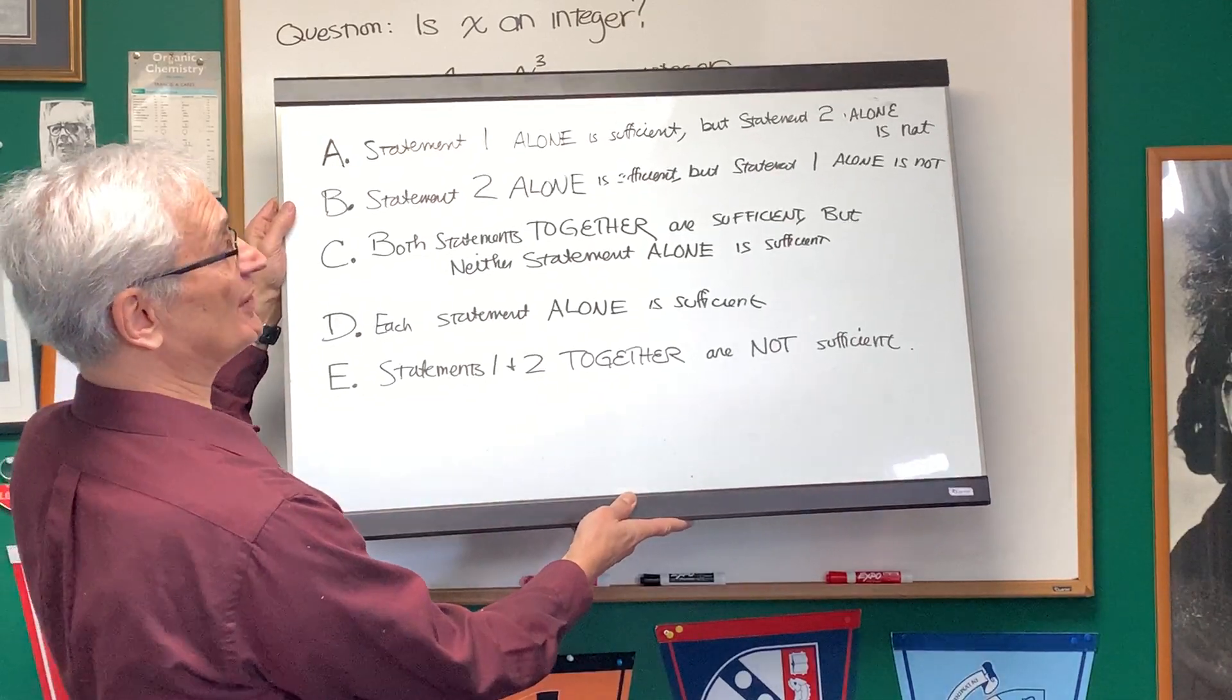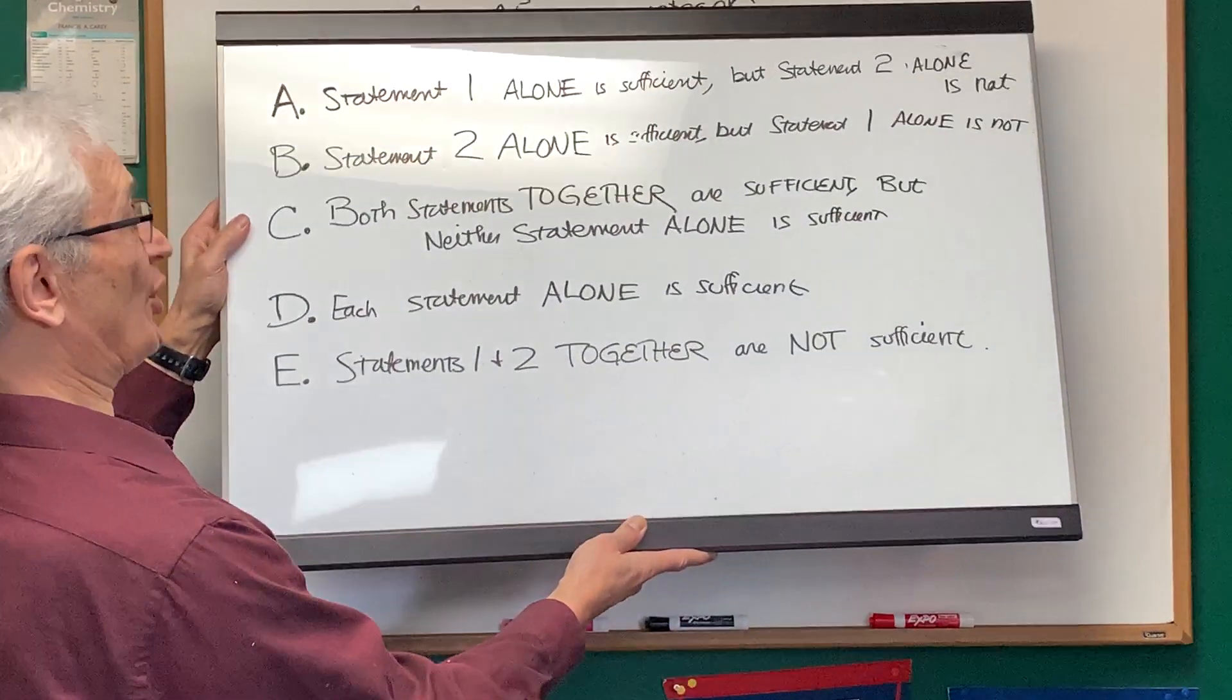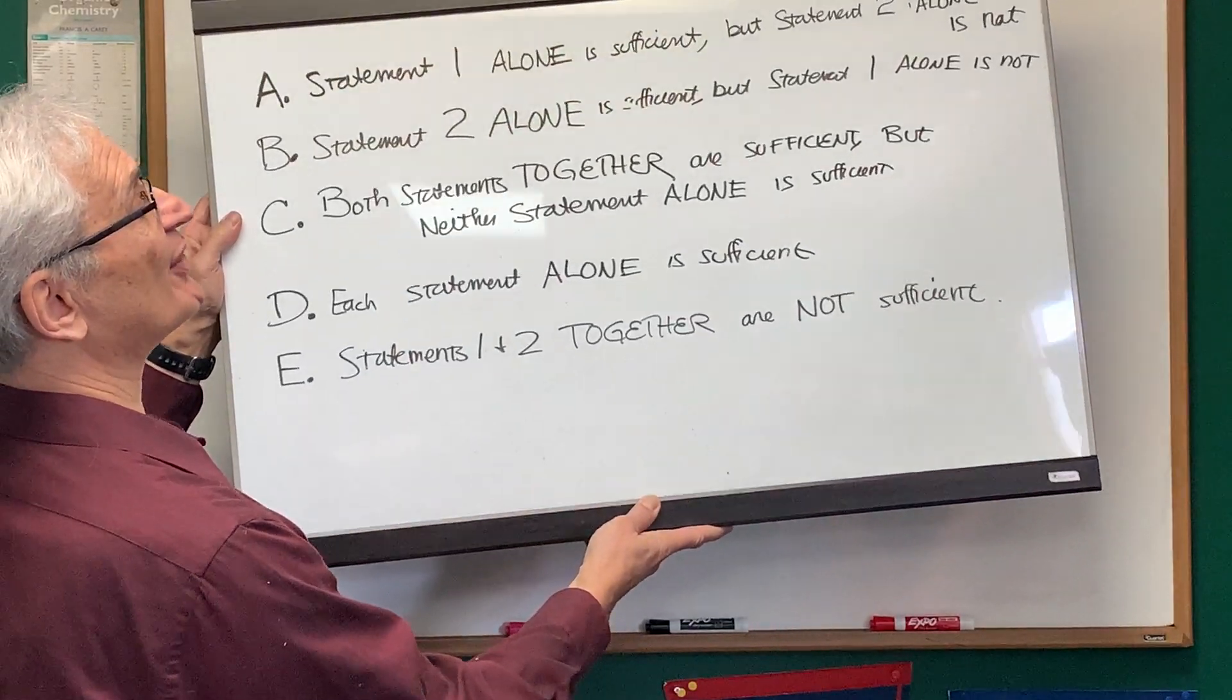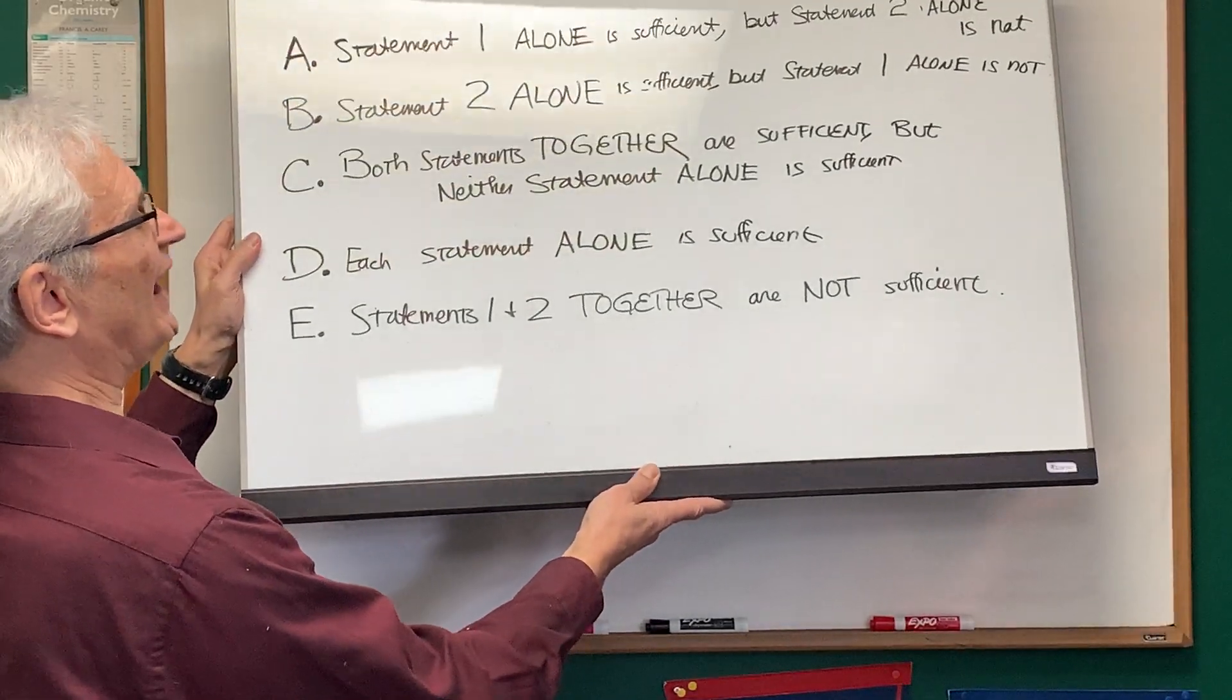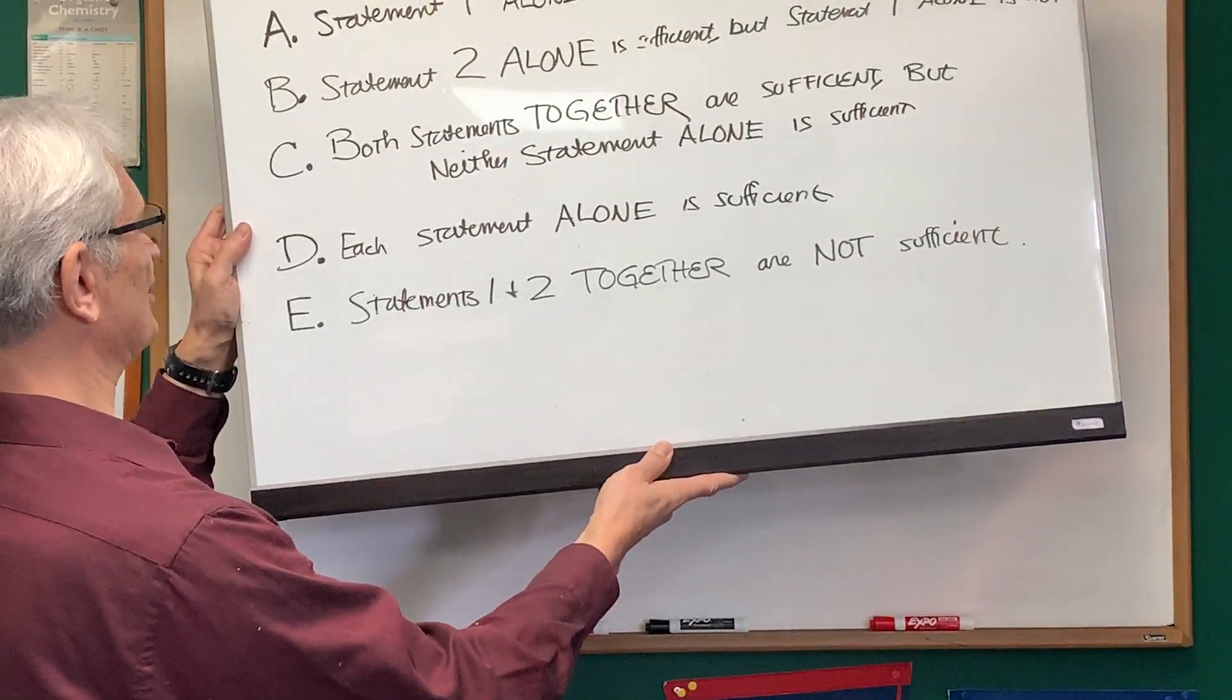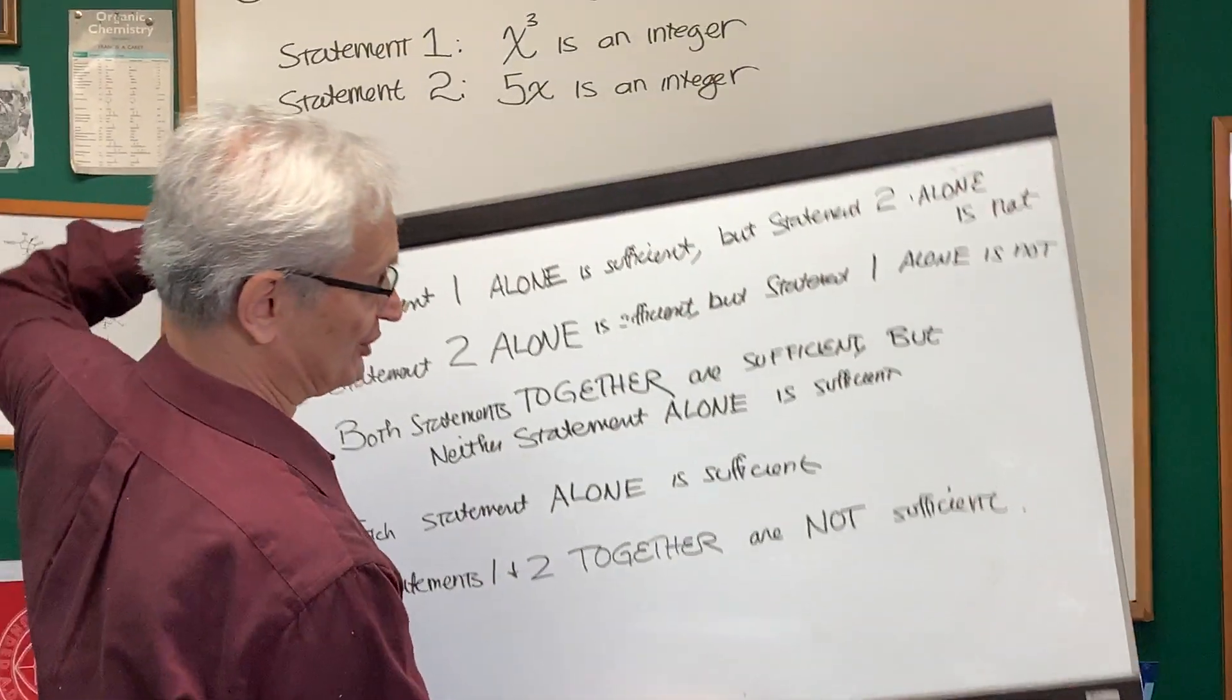Choice B: statement two alone is sufficient to answer the question, but statement one alone is not. Choice C: both statements together are sufficient, but neither statement alone is sufficient. Choice D: each statement alone is sufficient. And finally, choice E: statements one and two together are not sufficient.